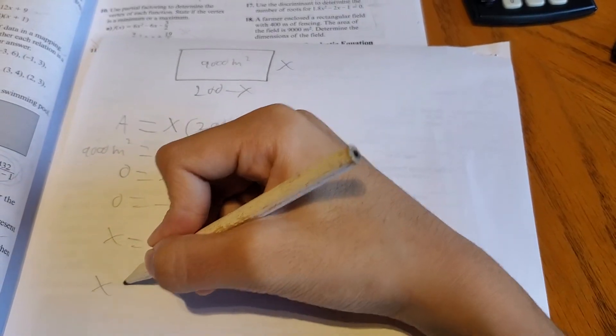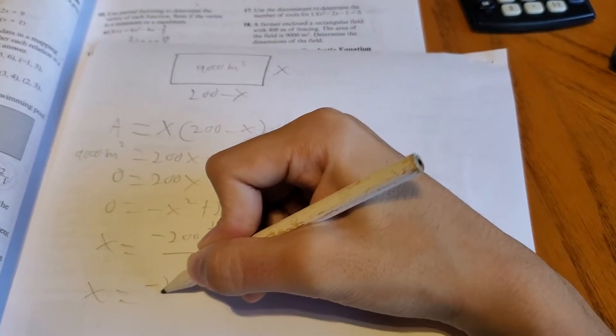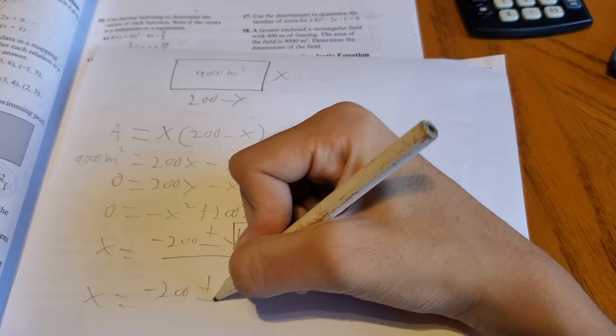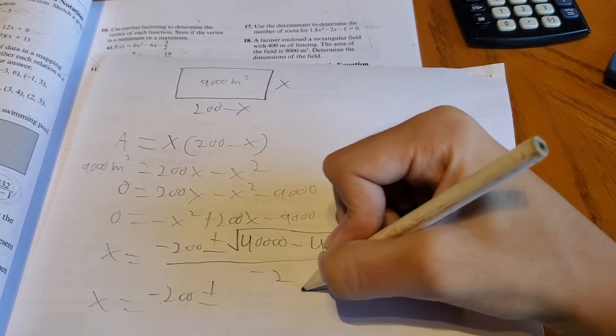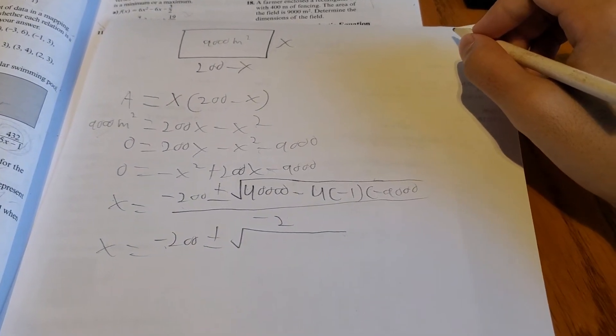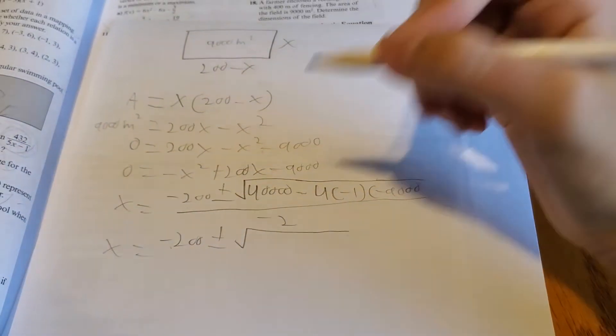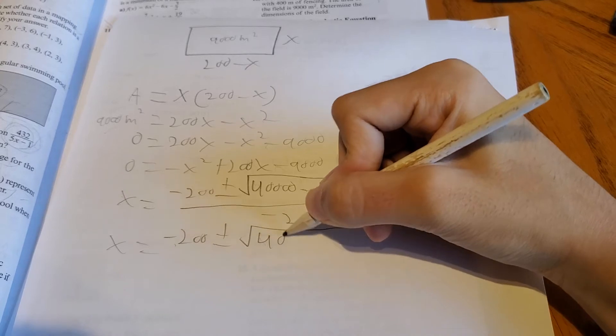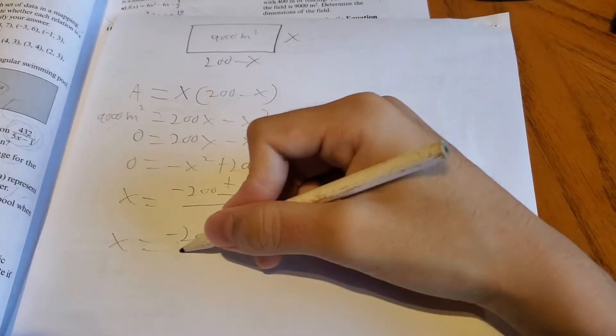So now let's simplify this. x equals negative 200 plus or minus the root of what's inside the root of 4,000 over negative 2.